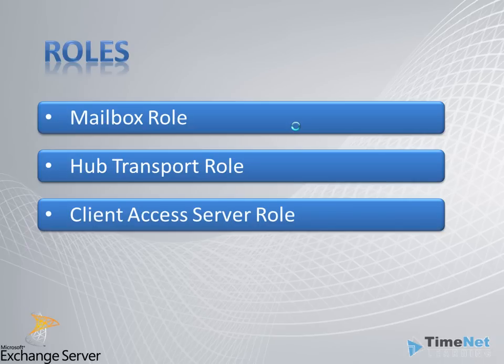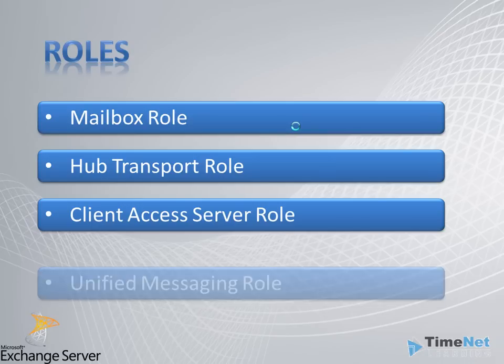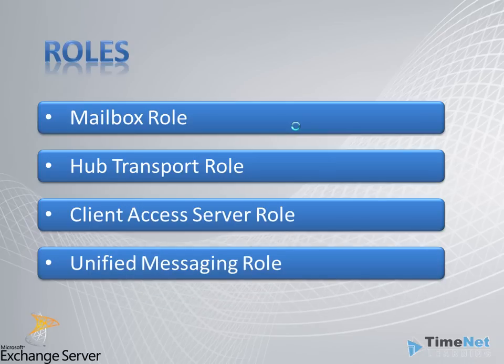The Client Access Server role enables clients to access their emails. The most commonly used client access methods are Outlook Web App (OWA), MS Outlook, and Exchange ActiveSync for mobile users. The Unified Messaging Server role helps us integrate our Exchange Server organization into an existing unified messaging environment, such as a Cisco VoIP environment or a Microsoft Office Communications environment.